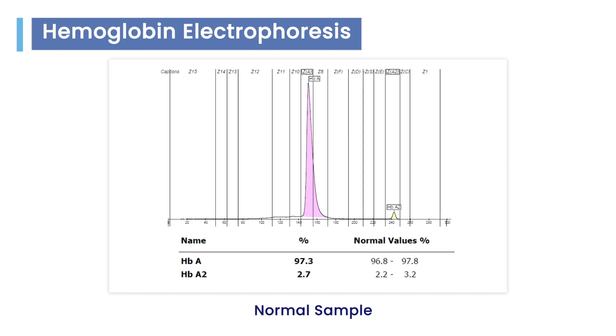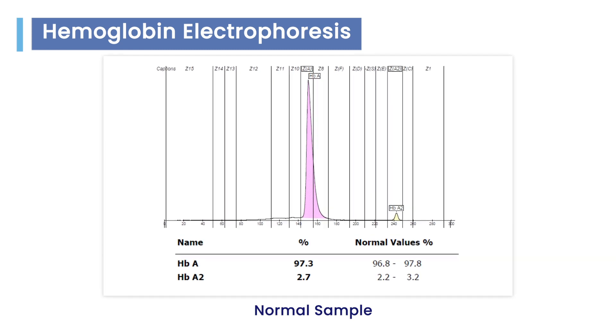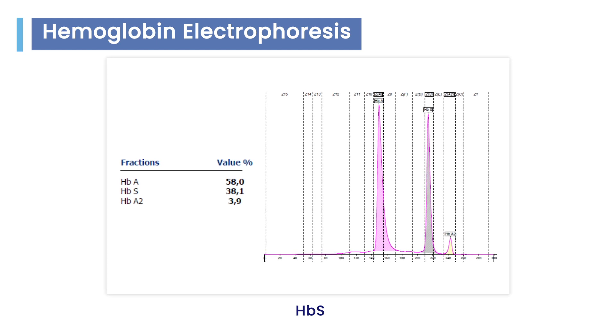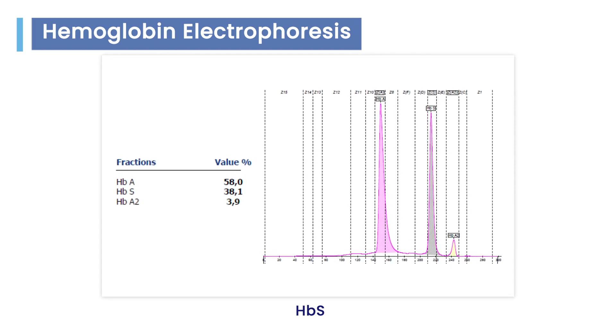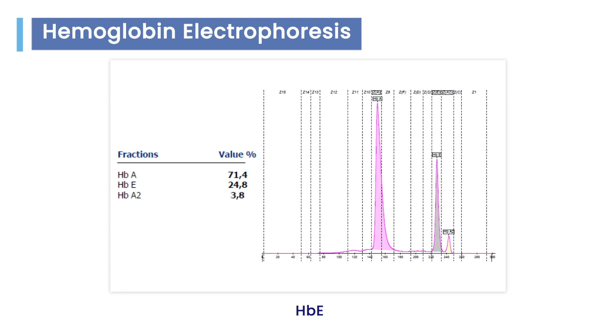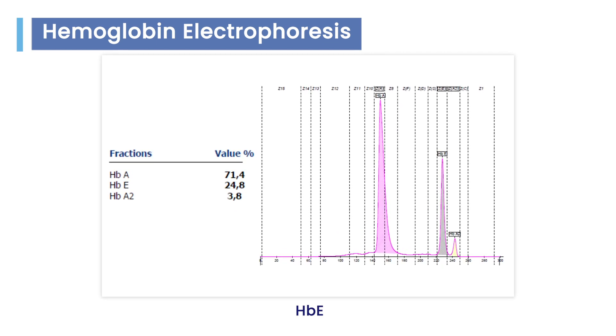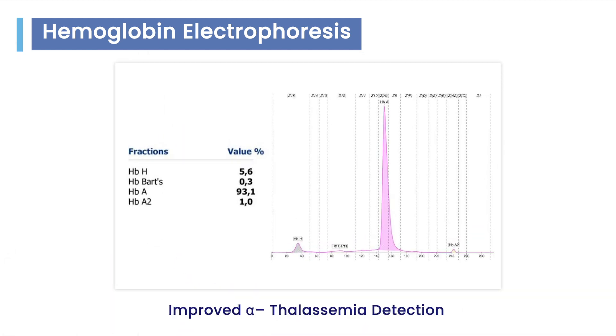Capillary instrument allows high resolution and clear-cut separation of major hemoglobin variants with accurate quantification of HbA2 and HbF in presence of HbE, HbD, HbS, HbLipore and others. It also facilitates easier detection and quantification of HbBarts and HbH.